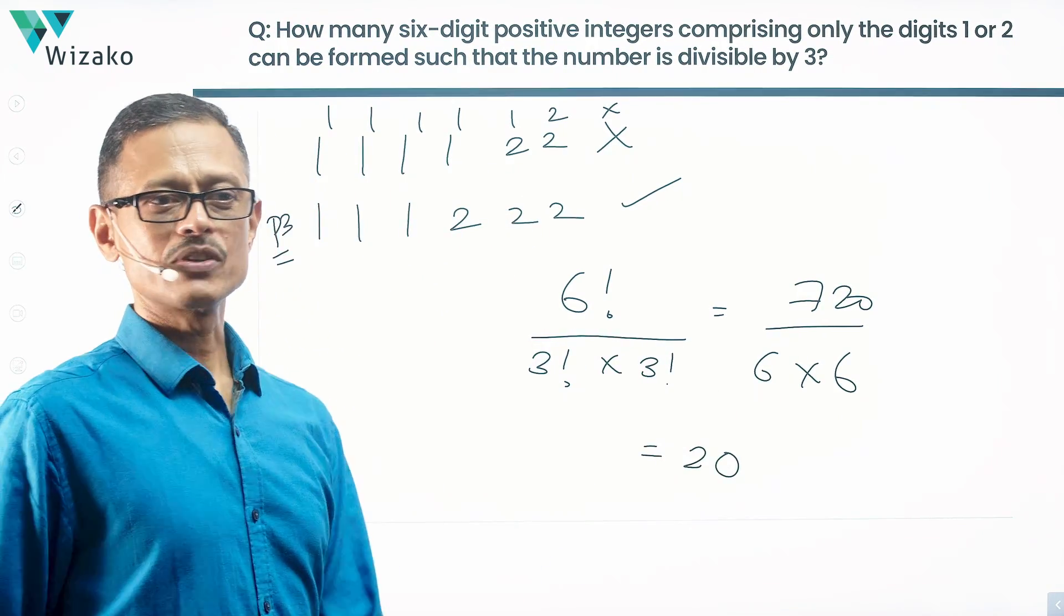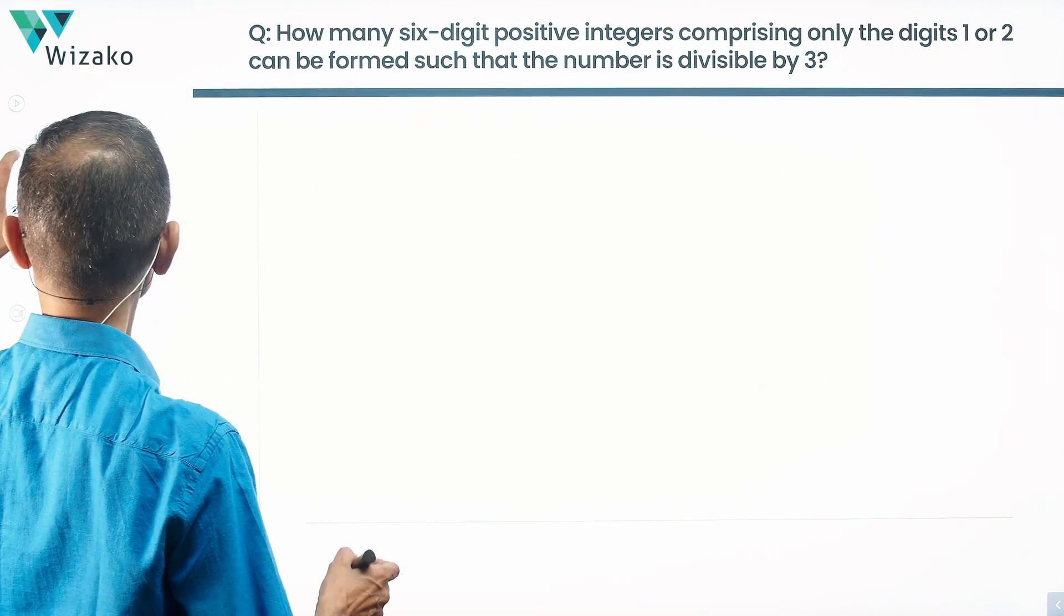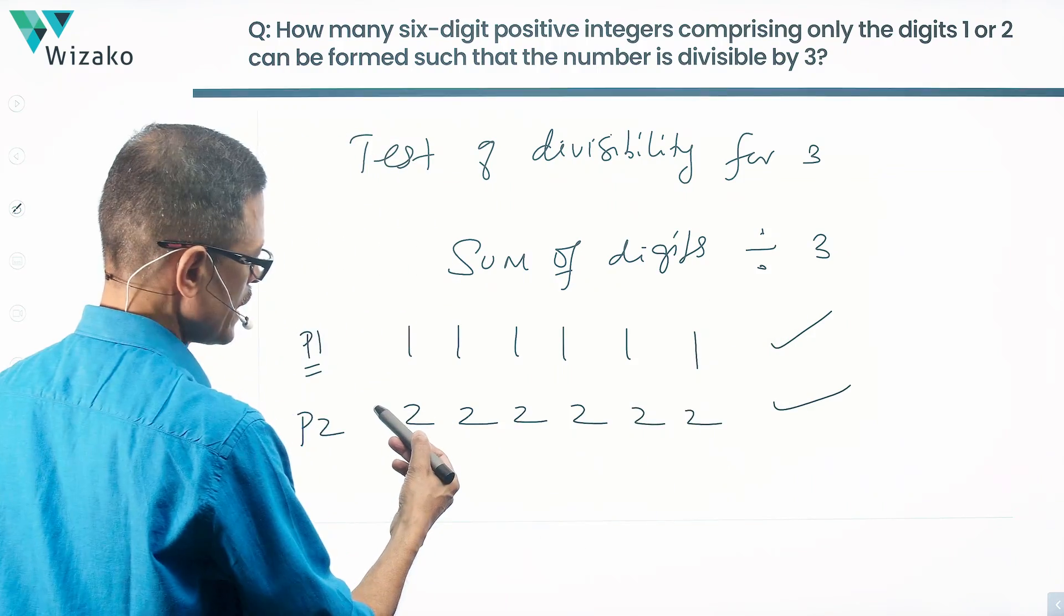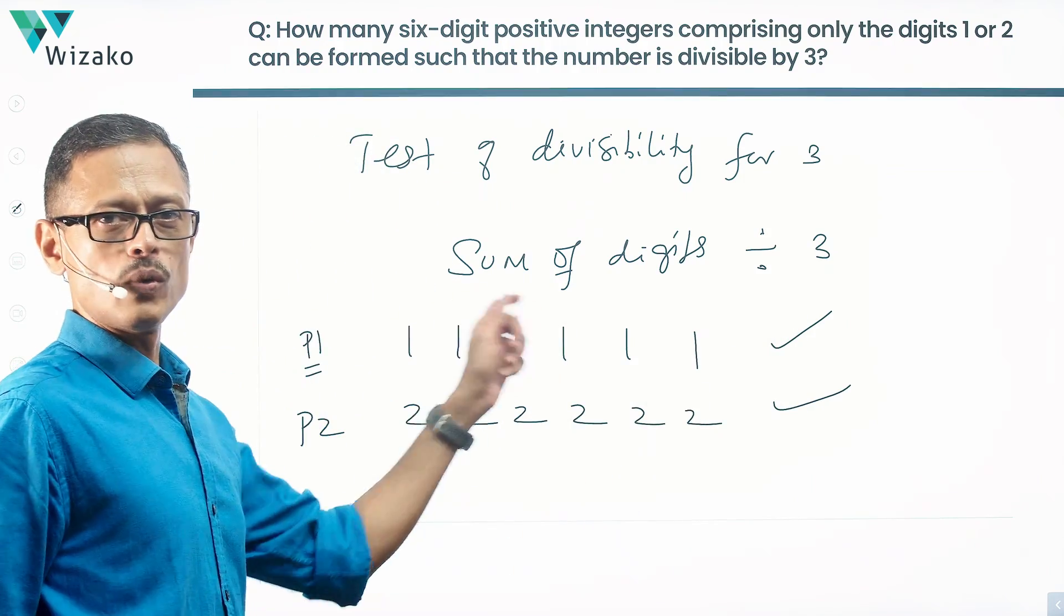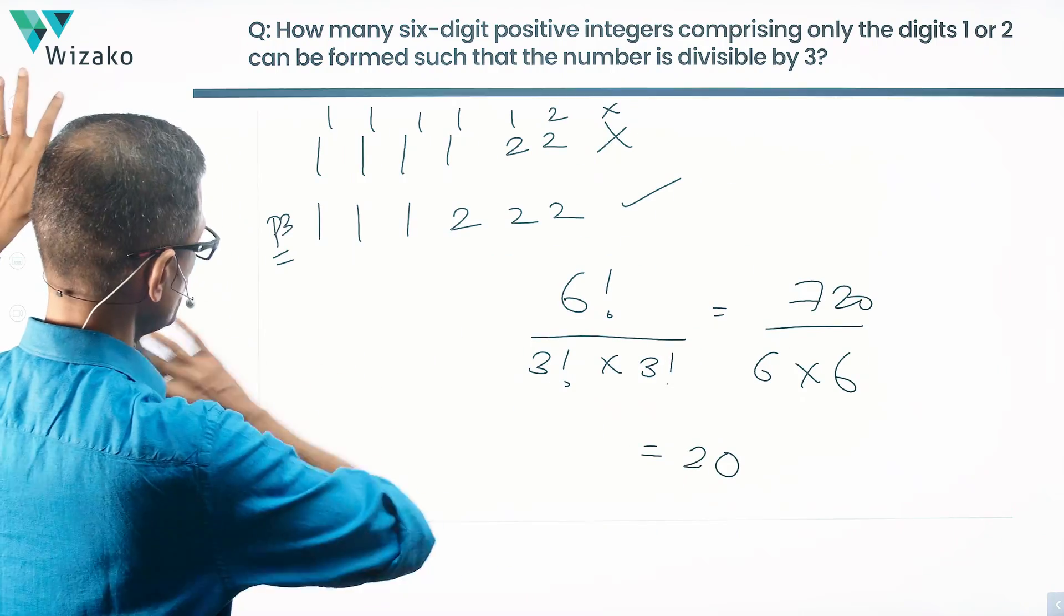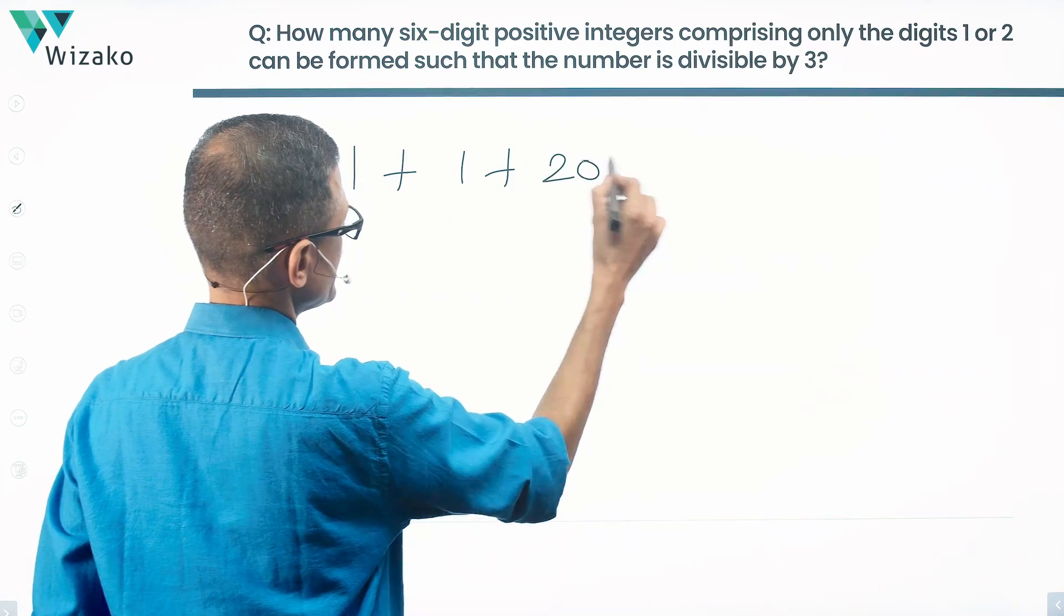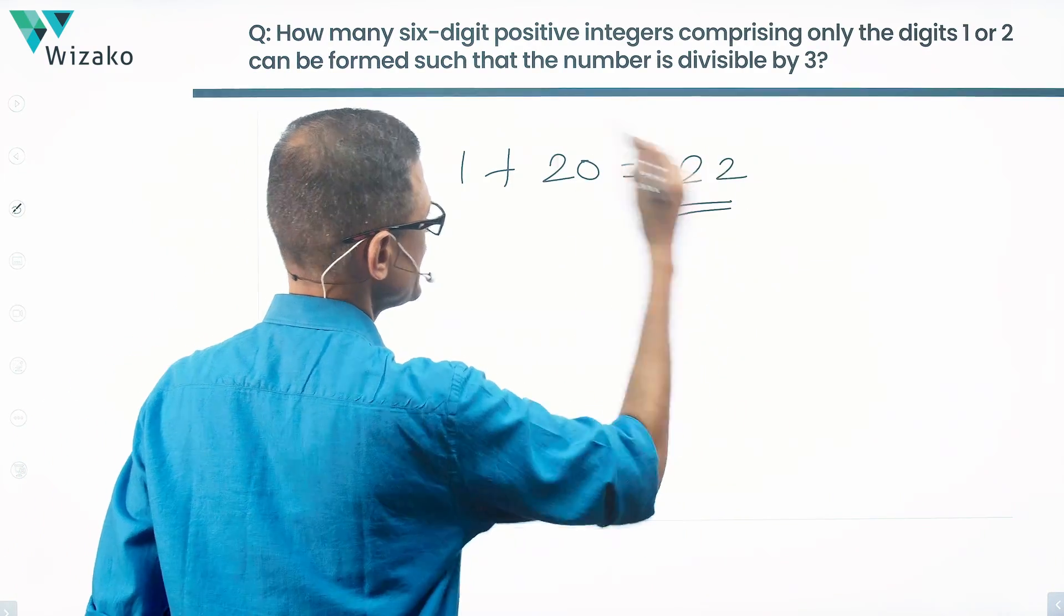We have 20 such numbers which are triple 1, triple 2 reorderings. We had 1 number which basically passed the muster which is all of them being 1s, 1 number all of them being 2s. So 1 plus 1, 2 such numbers plus 20 in this third possibility. No more possibilities exist. So 1 plus 1 plus 20, that makes it as a total of 22 such numbers.